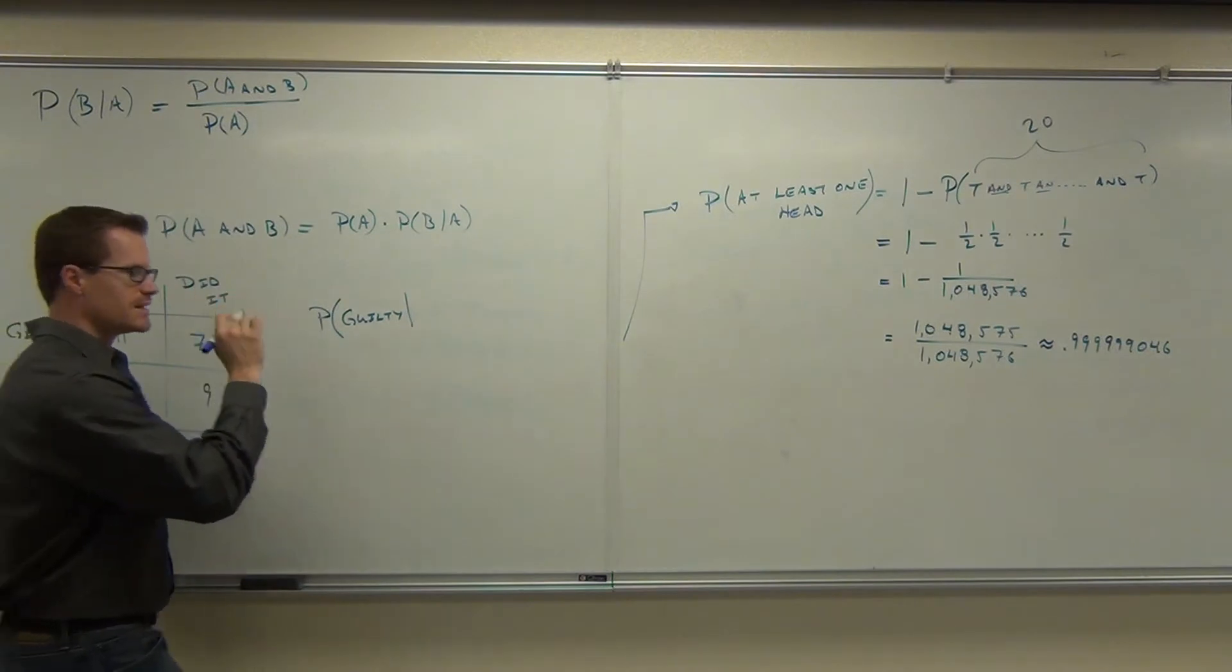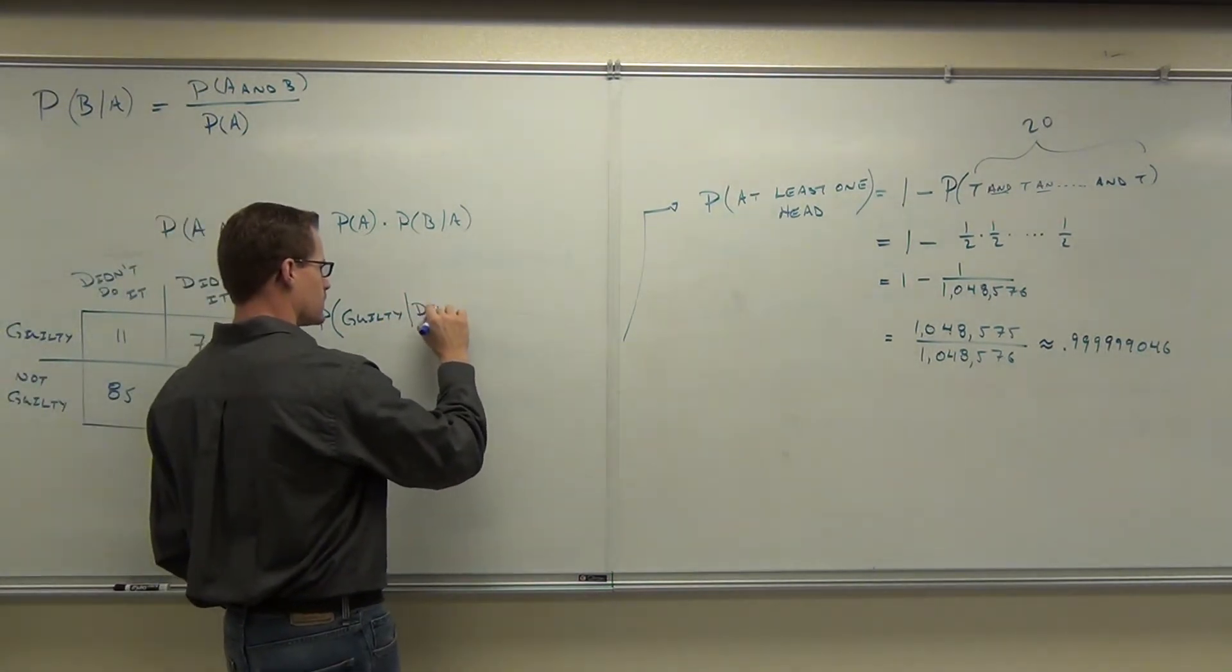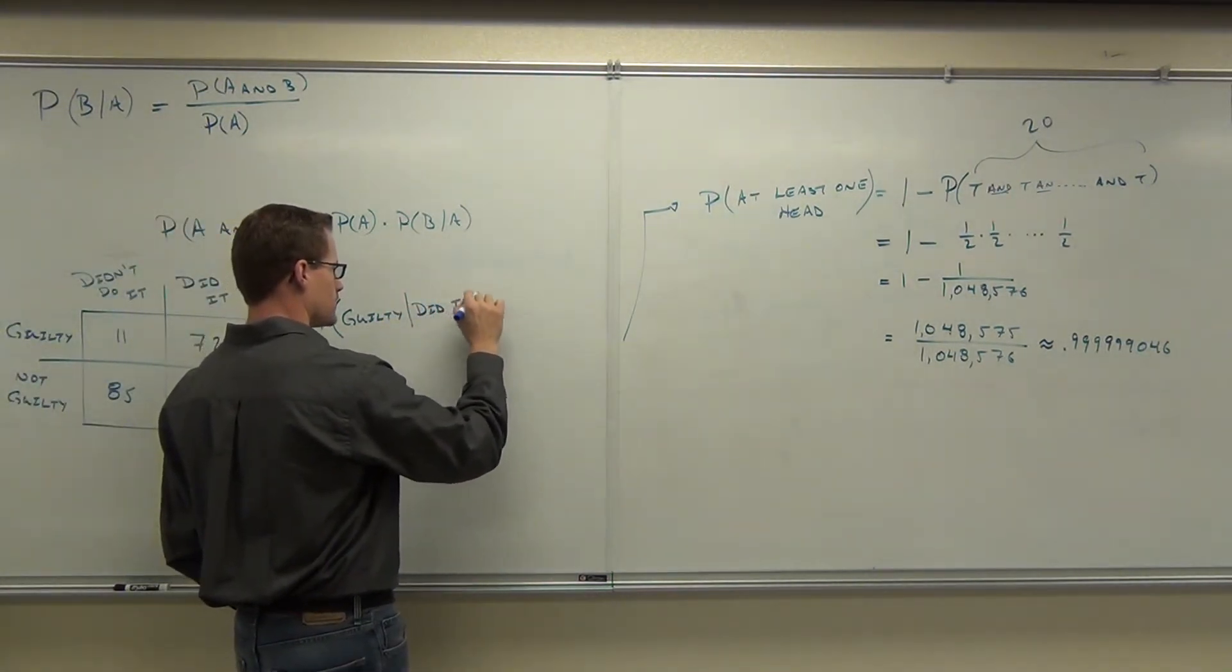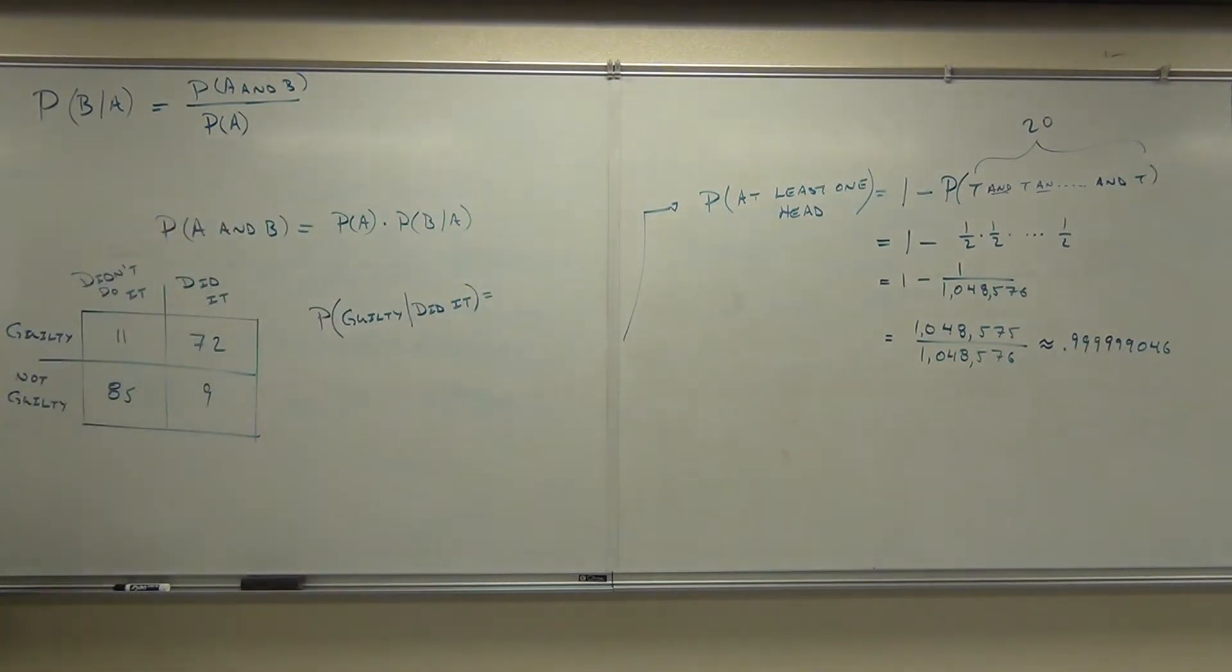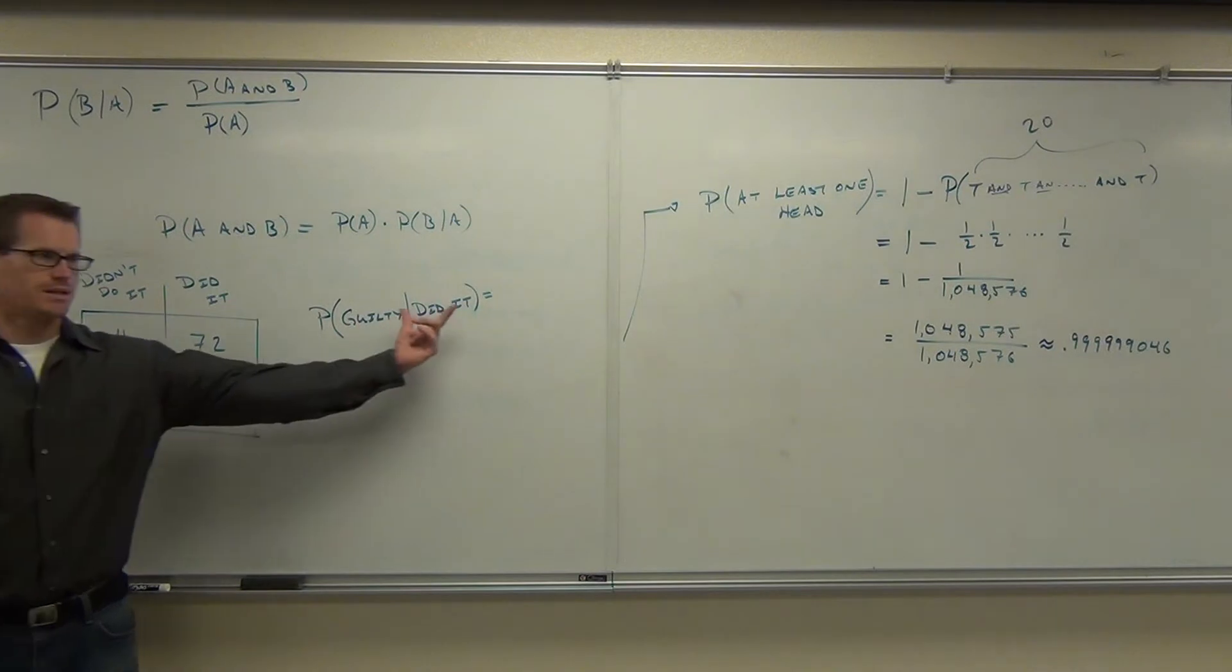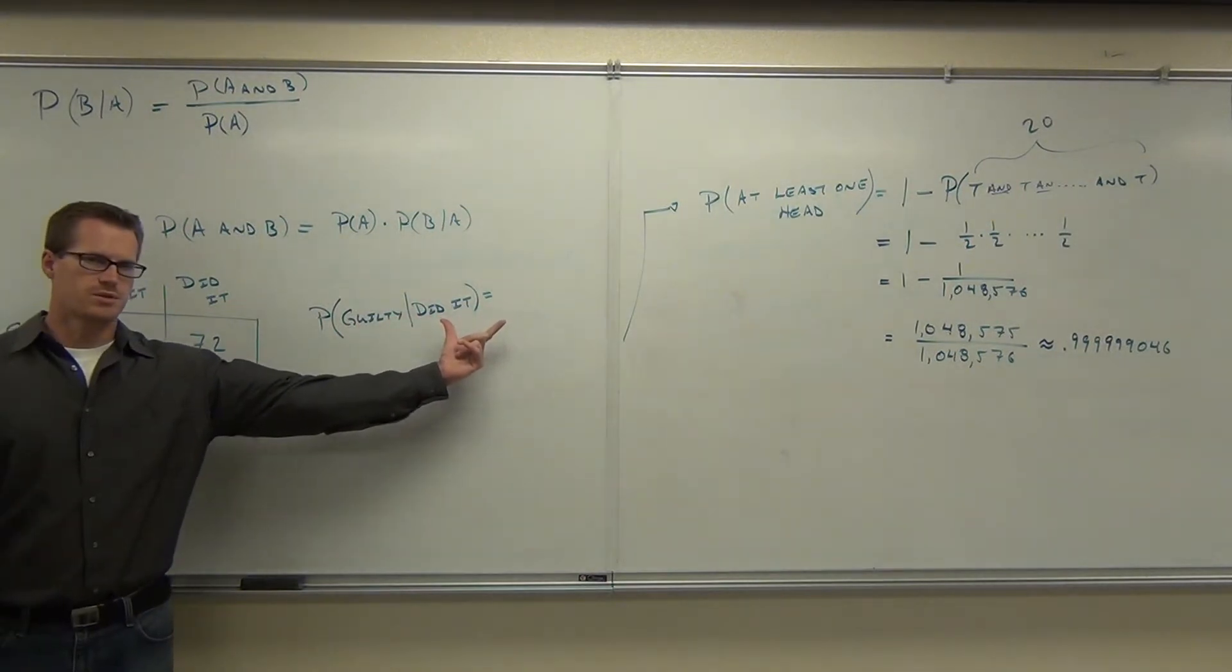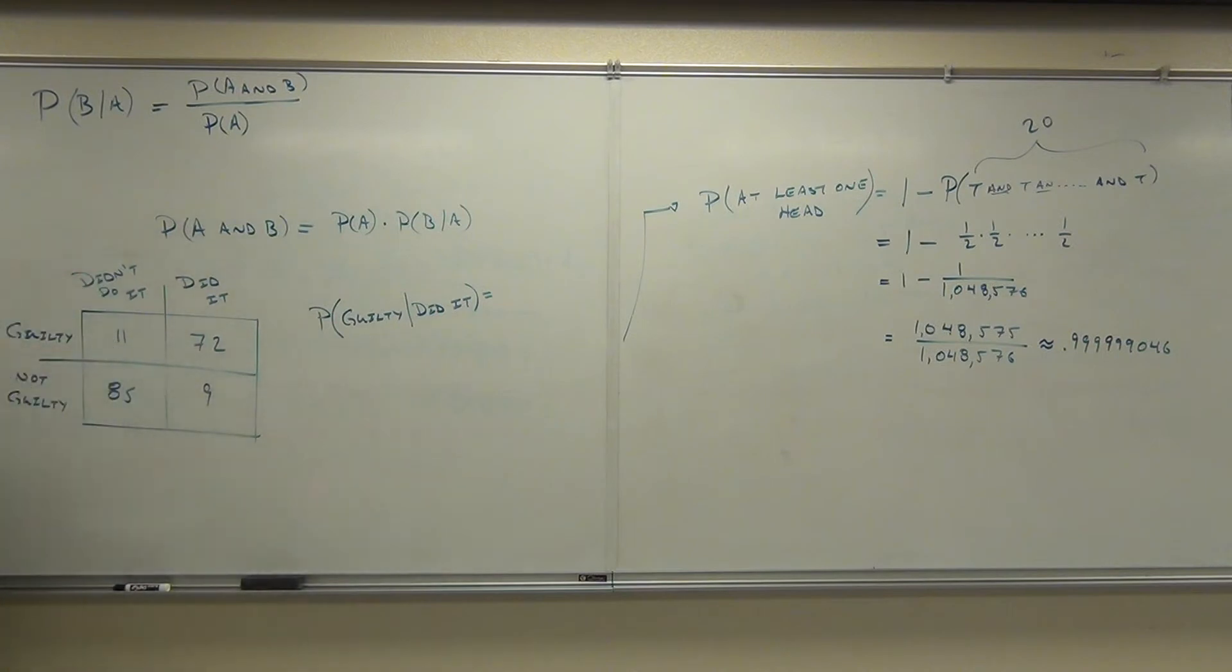Given that you know they did it, this scenario says what's the probability of finding someone who's guilty? Given that you know they did it. If they say given that you know they did it, like that, given you're already in that situation, that that event happened, that they had.